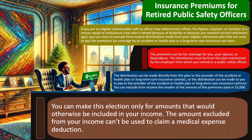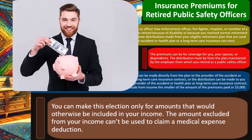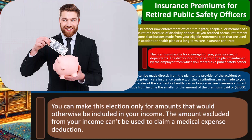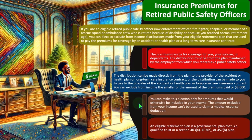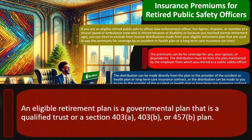You can make this election only for amounts that would otherwise be included in your income. The amount excluded from your income can't be used to claim medical expense deductions — meaning if it wasn't going to be included in income, then you already have the benefit. If it was going to be included in income, then possibly if this applies, you might get the benefit of removing it.